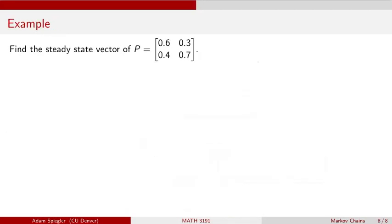All right, so now let's take a look at an example. Let's say we have a transition matrix P, which is given by a two by two matrix where the first column is 0.6, 0.4, and the second column is 0.3, 0.7. And this is a transition matrix for some Markov chain. And we would like to find the steady state vector for this transition matrix, which happens to be a stochastic matrix.